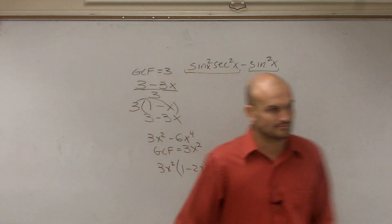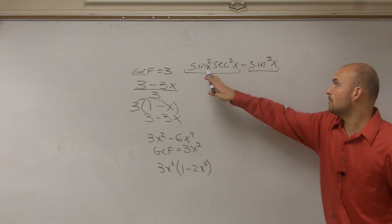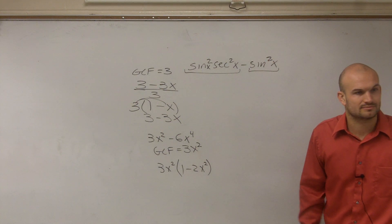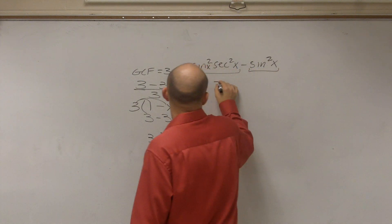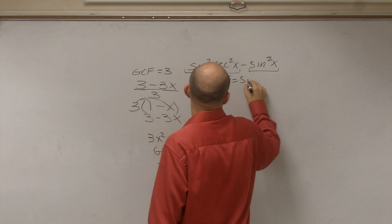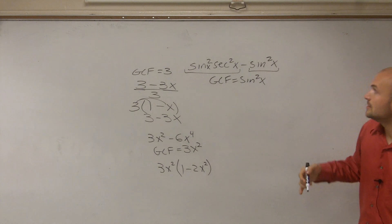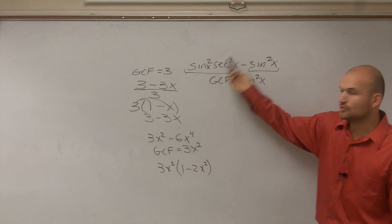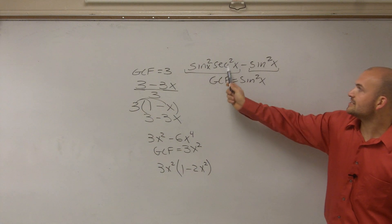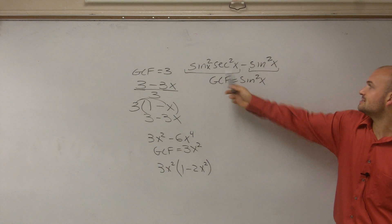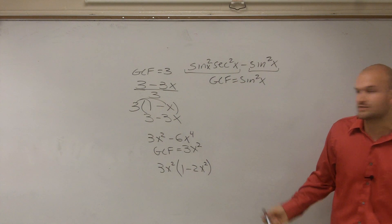So now we're going to use trig. So we look over here and we say, what do these two terms have in common? Sine squared. Sine squared of x. So we could say the GCF equals sine squared of x. So now we need to divide both terms by sine squared of x.